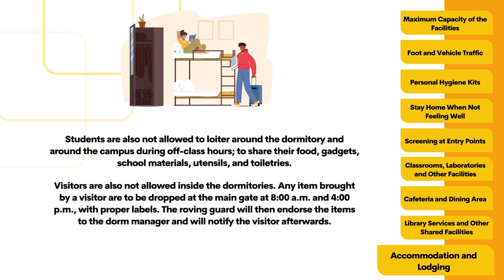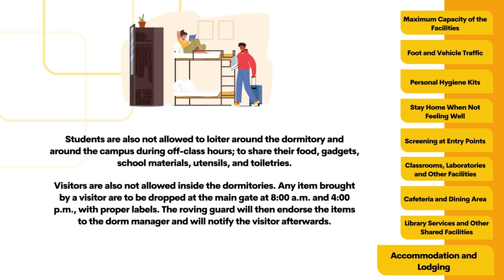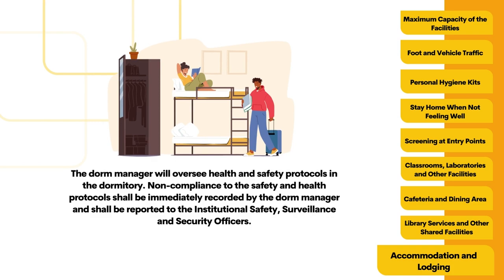Visitors are not allowed inside the dormitories. Any item brought by a visitor is to be dropped at the main gate at 8 a.m. and 4 p.m. with proper labels. The roving guard will then endorse the items to the dorm manager and notify the visitor afterwards. The dorm manager will oversee health and safety protocols in the dormitory. Noncompliance to the safety and health protocols shall be immediately recorded by the dorm manager and reported to the institutional safety, surveillance, and security officers.